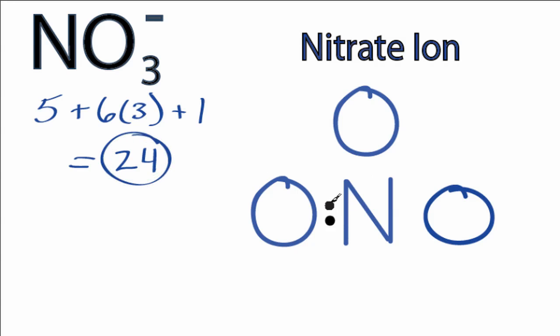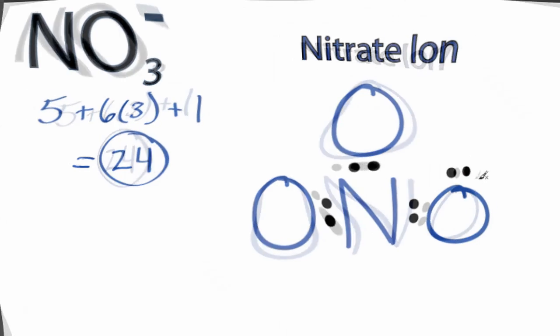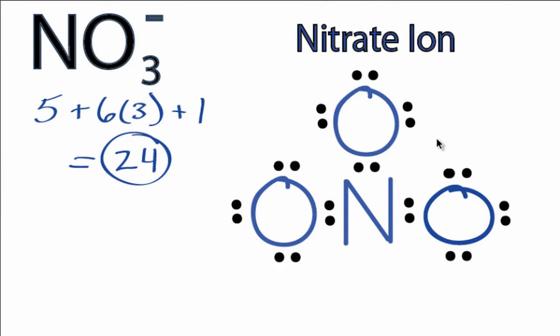We'll put two between atoms to form chemical bonds. We've used six valence electrons, then we'll go around the oxygens to complete the octets or until we run out of valence electrons. So six, eight, and 24.